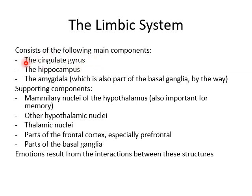First up we have the cingulate gyrus, which you can only really see on a mid-sagittal view of the brain. The hippocampus is deep in the temporal lobes — you have to cut away the temporal lobe to discover this structure lying deep inside it. And the amygdala, which is just anterior to the hippocampus and is also part of the basal ganglia. In the limbic system, the amygdala plays a role more with emotions in general, whereas in the basal ganglia it plays a role in decision-making processes.